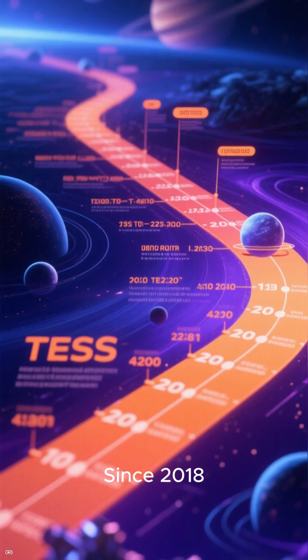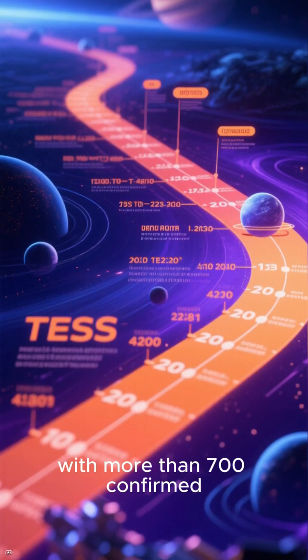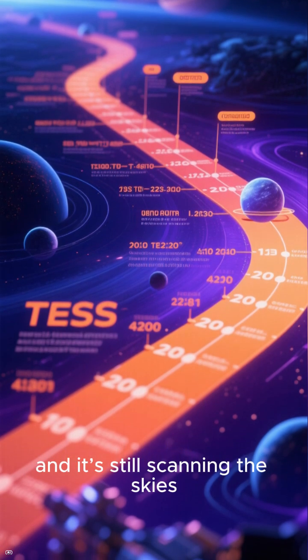Since 2018, TESS has found over 7,700 planet candidates, with more than 700 confirmed, and it's still scanning the skies.